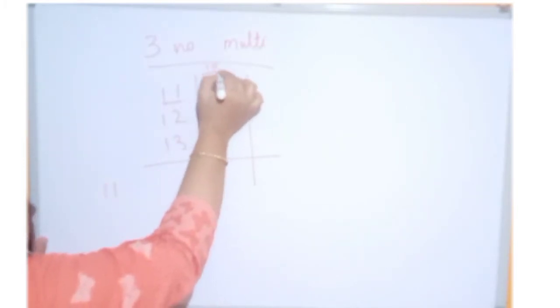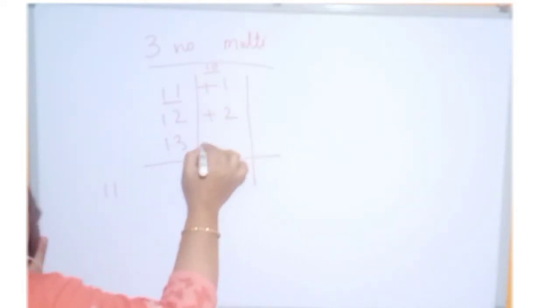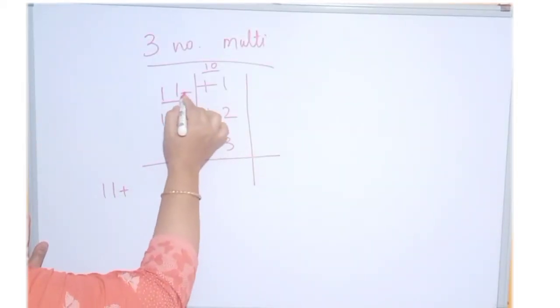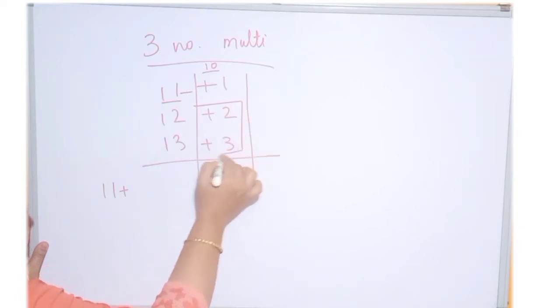Now, this is the base of 10. How much more is this? 1, this is 2 and this is 3. Now, we will calculate 11 plus any. This we have got. So, this 2 addition plus 2 plus 3.